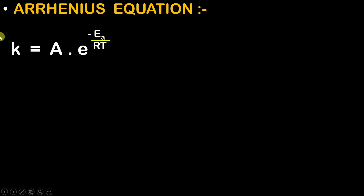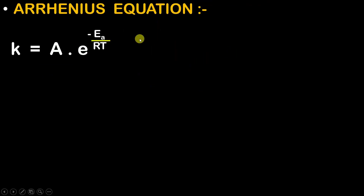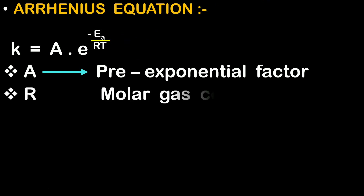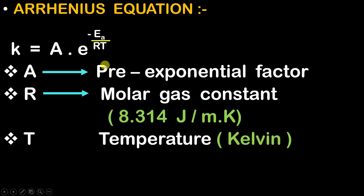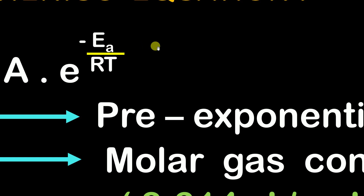To help us with that, Arrhenius gave an equation known as the Arrhenius equation. In this equation, K is the rate constant and T is the temperature — this is how K and T are related. Here, A is the pre-exponential factor, whose value will be given in the question. R is the molar gas constant with a value of 8.314 joules per mole per Kelvin. T is the temperature in Kelvin — you cannot use degrees Celsius. And E_A is the activation energy.